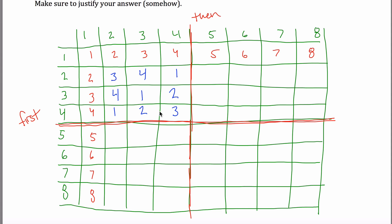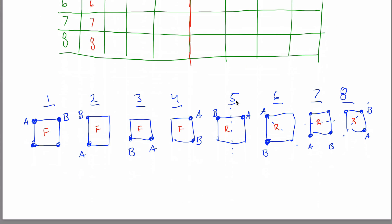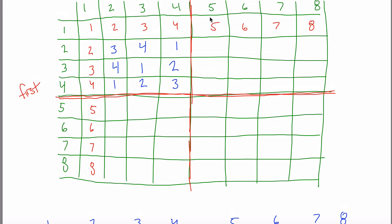Quarter of the way done — that's the first quadrant. Now I'll jump to the bottom-right quadrant. If you do a 5 and then another 5 — flip over this line and then flip again over the same line — you're right back where you started. Everything ends up right back where it started, so a 5 and then a 5 is just a 1. Similarly, a 6 and a 6 is a 1, a 7 and a 7 is a 1, and an 8 and an 8 is a 1.